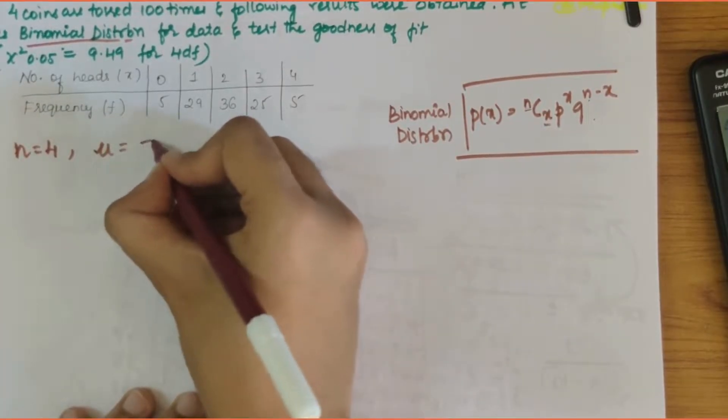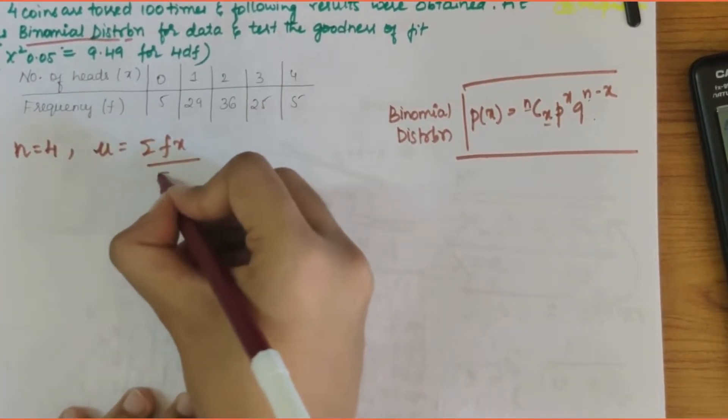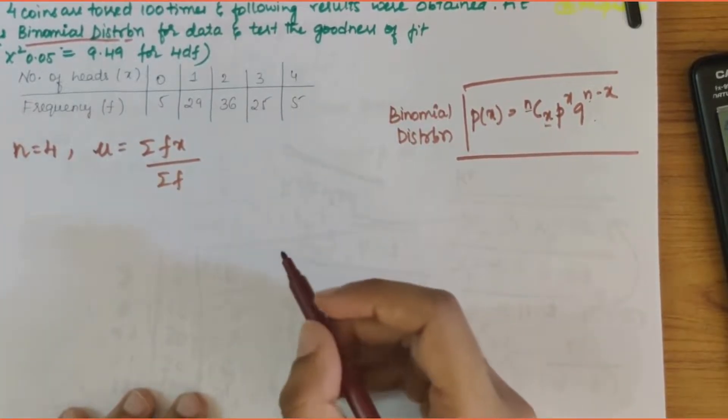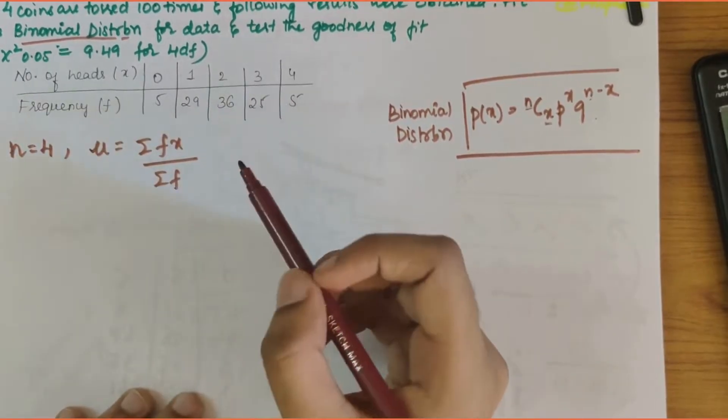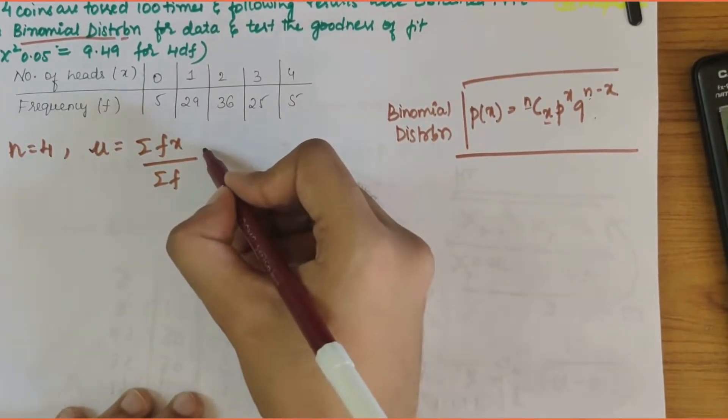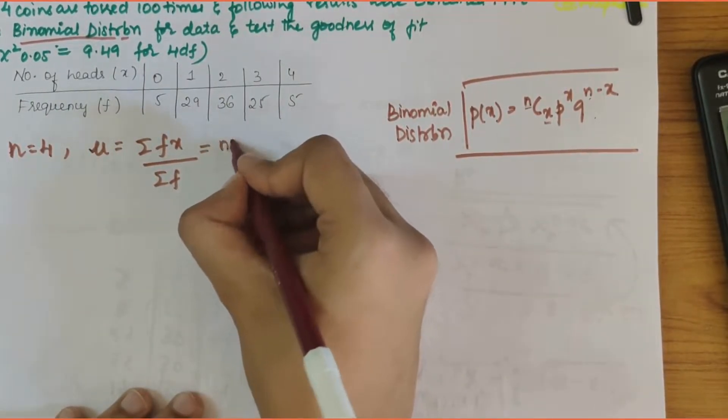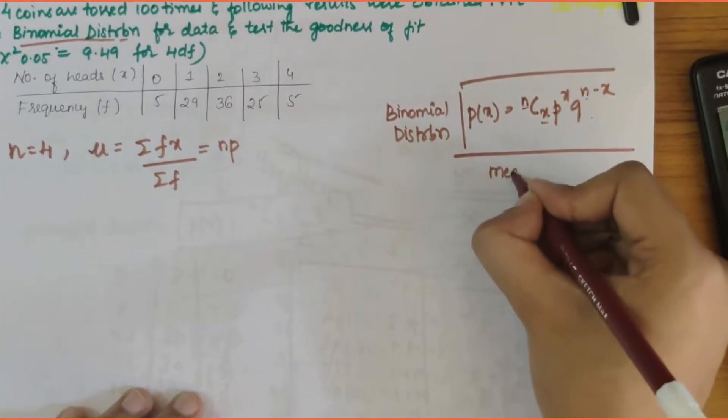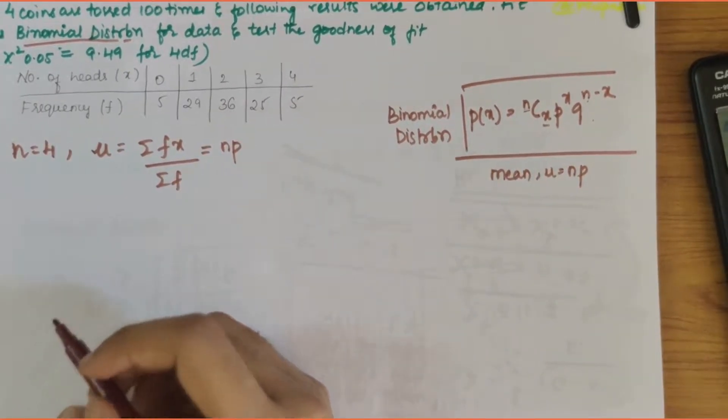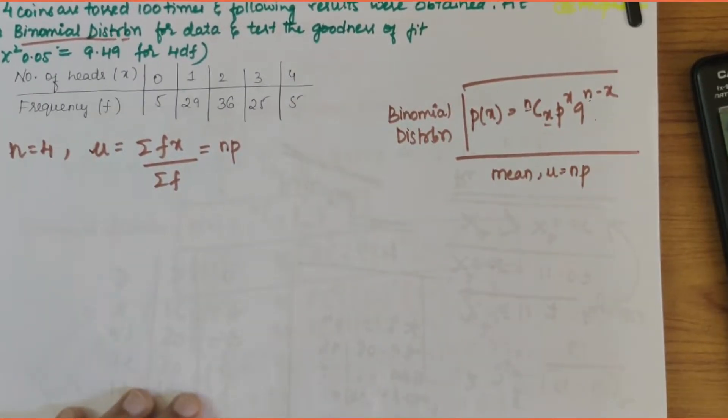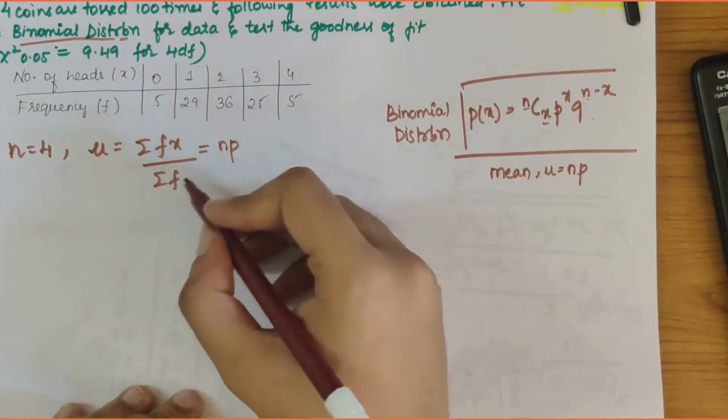So how will we calculate p and q values? We have one formula: mean is equal to summation of f times x divided by summation of f. You need to multiply these two and then divide it by summation of f, that would be equal to np because we know that mean or mu is equal to np for binomial distribution.